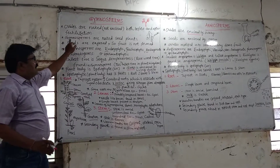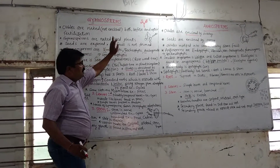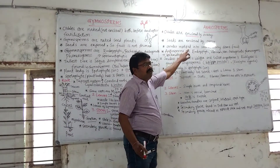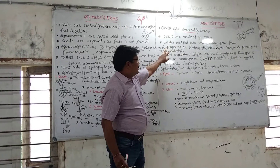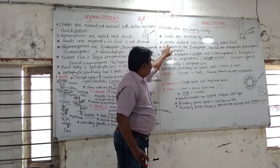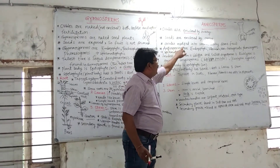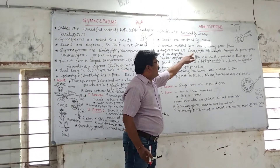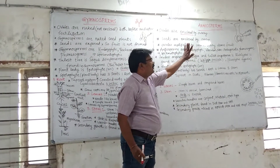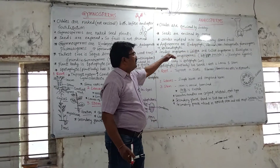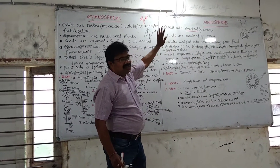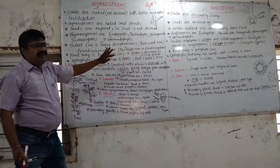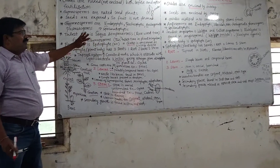If fruit is absent in gymnosperms, in angiosperms fruit is formed. After fertilization, ovules modify into seeds and the ovary forms fruit. So angiosperms are fruited vascular plants.